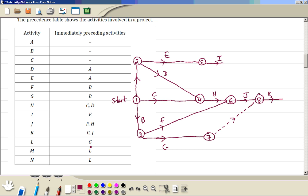Then L depends on G, that's L. M and N both depends on L. So event number 9, so this is M and N.